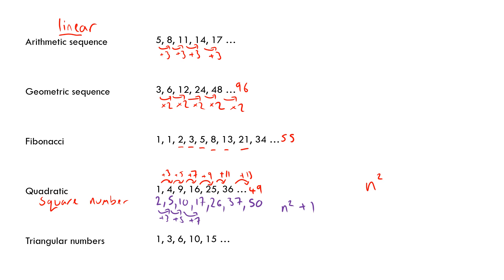The triangular numbers come up from time to time. Looking at the sequence, I'm adding 2, then 3, then 4, then 5, so the next term adds 6 to give 21, then add 7 to get 28, and so on.